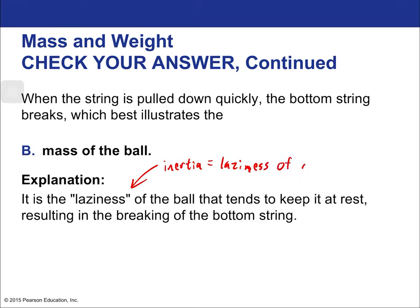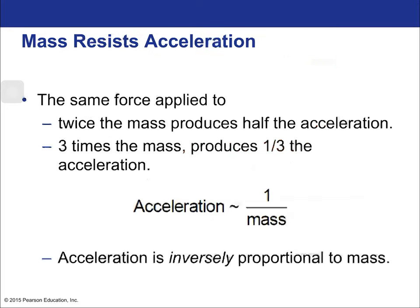Inertia is the laziness of matter — the resistance of matter to change. It doesn't want to be accelerated quickly, and if you try, something has to give — in this case, the bottom string. Now, the same force applied to twice the mass produces half the acceleration; three times the mass produces one-third the acceleration. So acceleration is inversely proportional to mass: if mass goes up, acceleration goes down.